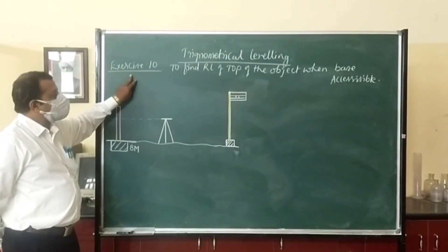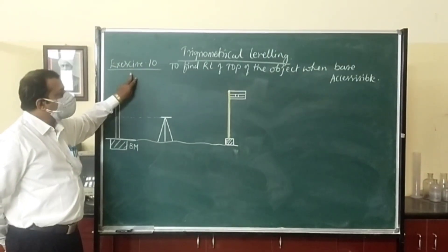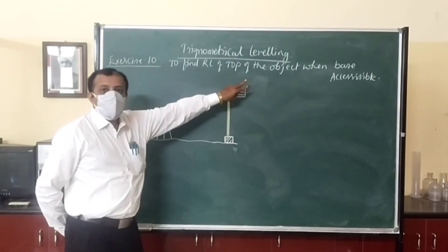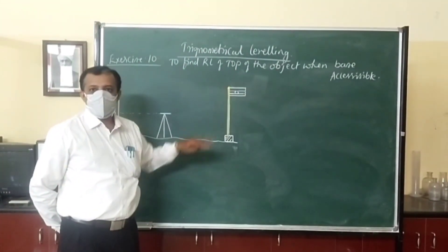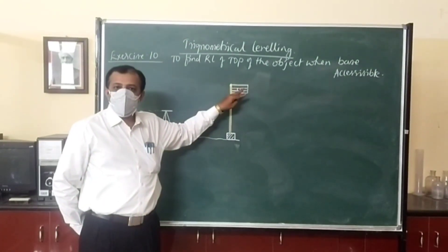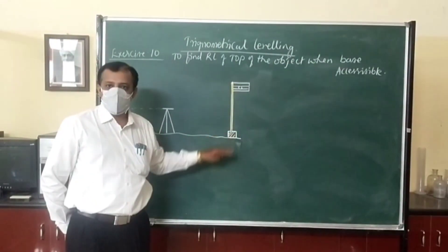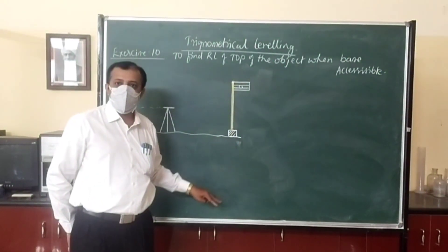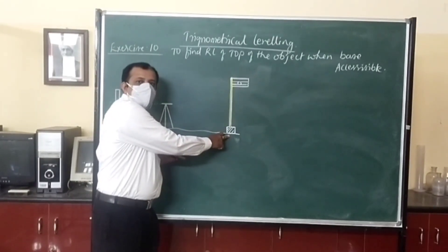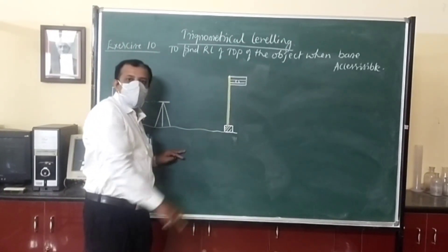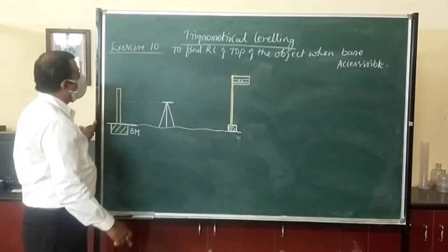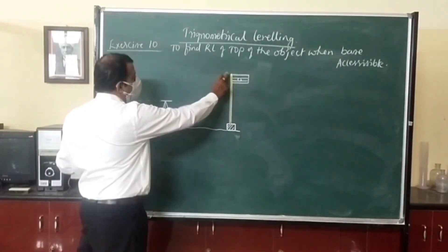This is an exercise on finding the RL of the top of an object. To find the RL of the top of the object when the base is accessible, there are two cases: when the base is accessible and when the base is inaccessible. Base accessible means you are able to reach the base; base inaccessible means you cannot reach the base.